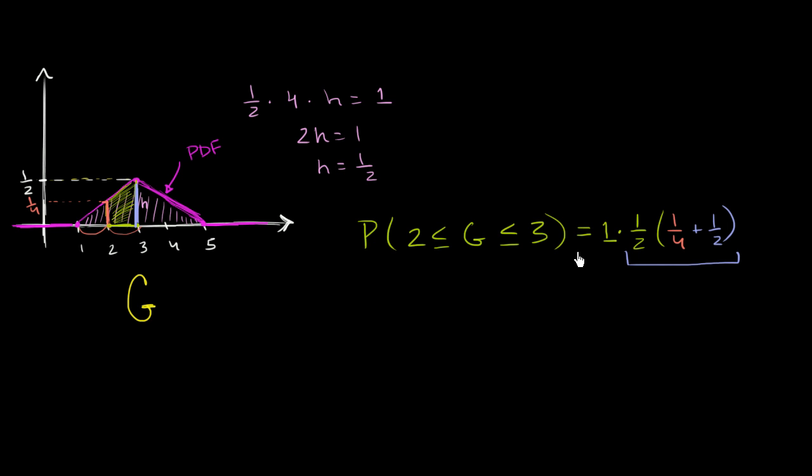This base is 1. And then we're multiplying it times the mean height of the trapezoid. So this is going to be equal to, well, 1 times anything is anything. It's going to be 1/2 times 1/4 plus 1/2.